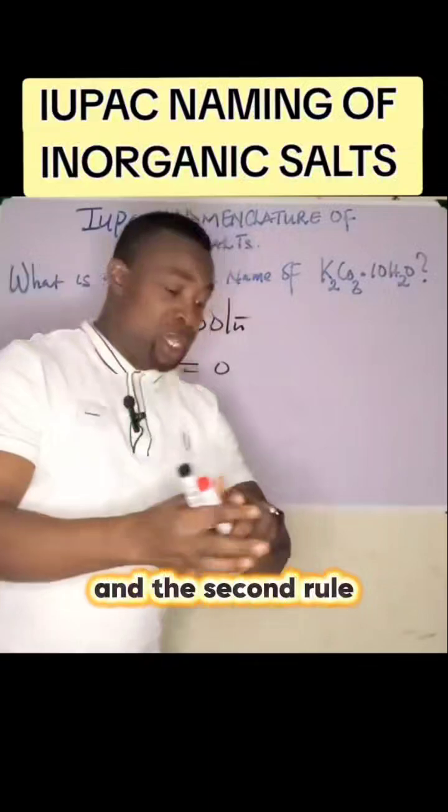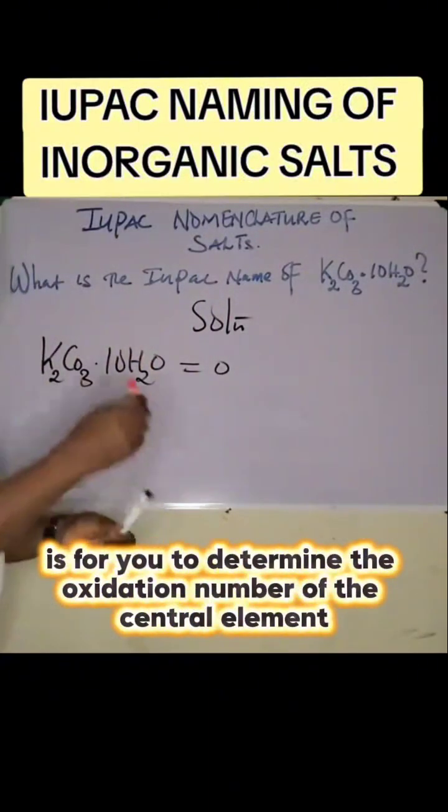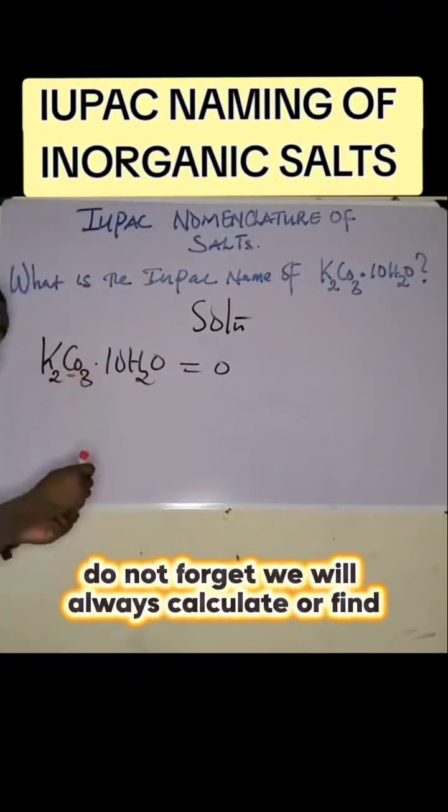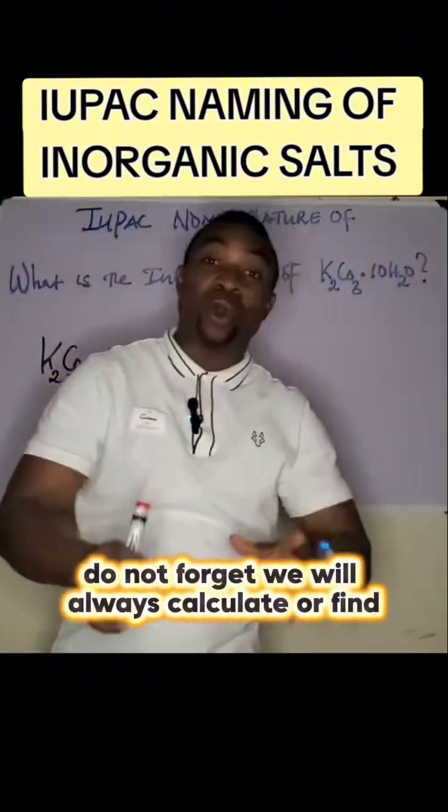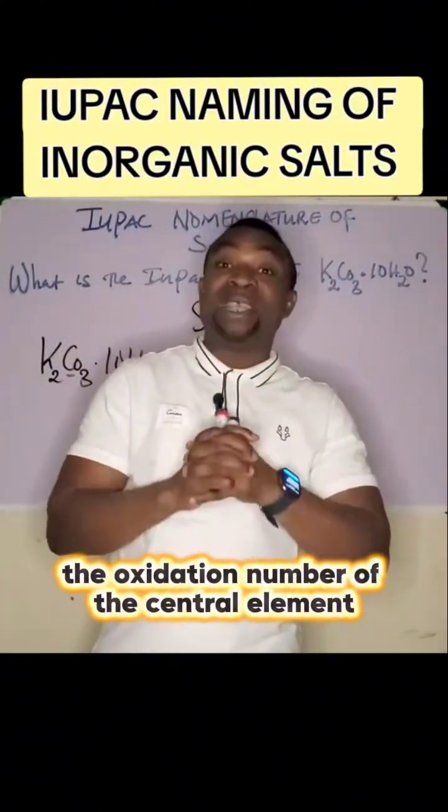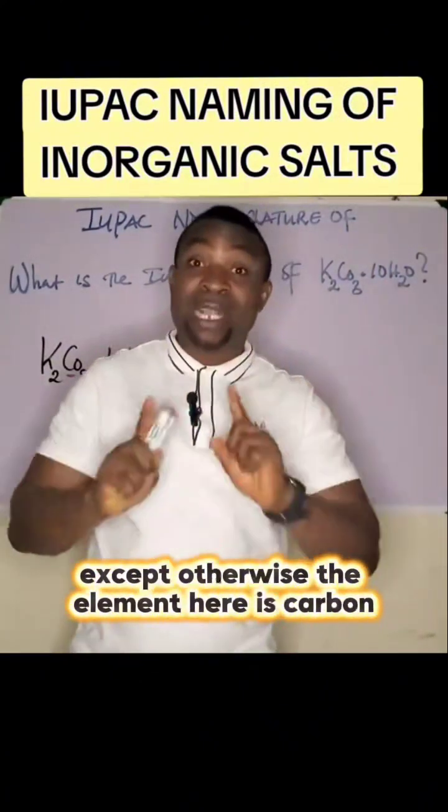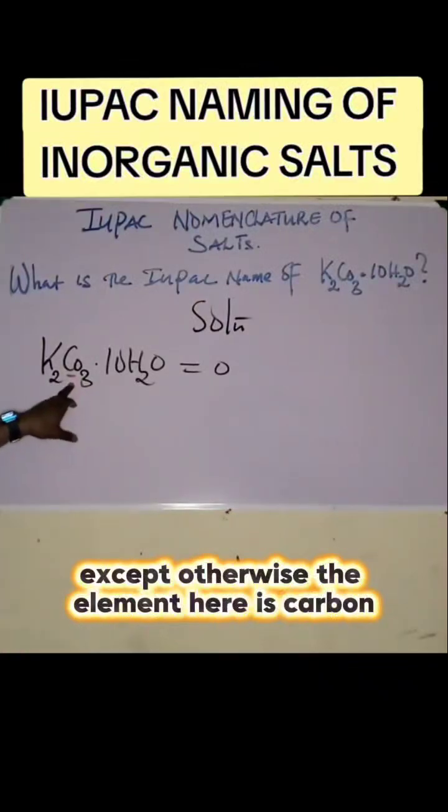The second rule is for you to determine the oxidation number of the central element. Do not forget, we will always calculate or find the oxidation number of the central element, except otherwise. The element here is carbon.